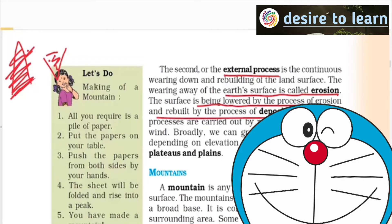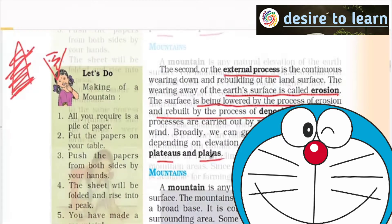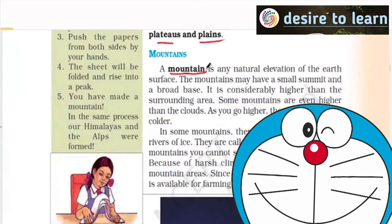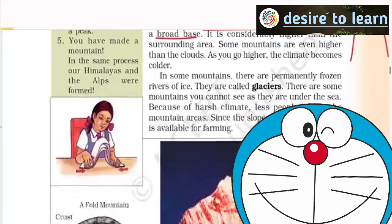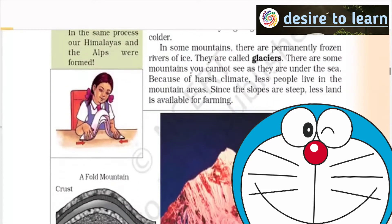Different structures come up: mountains, plateaus, plains. When we talk about mountains, any natural elevation of the earth's surface — the mountains may have a small summit and a broad base, meaning it is considerably higher than the surrounding area.